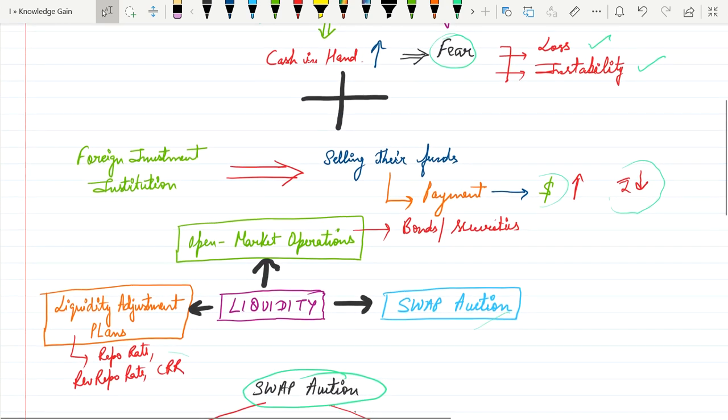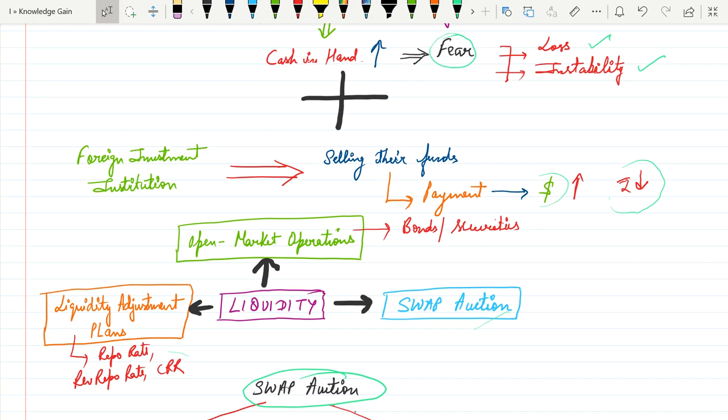The government has basically three options to control liquidity. First is open market operations where government can sell or purchase government securities and bonds to control liquidity. Second option is RBI can decide repo rate, reverse repo rate and cash reservations through monetary policy, also called liquidity adjustment plan. The third option is SWAP option plan.